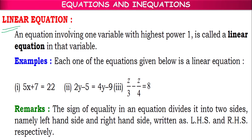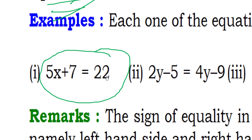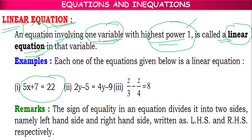Here children, linear equation means an equation involving one variable with highest power 1, is called linear equation. It should contain only one variable and that variable should have highest power 1. So 5x plus 7 equal to 22 — we have variable x here, one variable whose power is 1 (there is no constant x, so we can write x power 0), meaning highest power of x is 1. So this is an example of a linear equation.